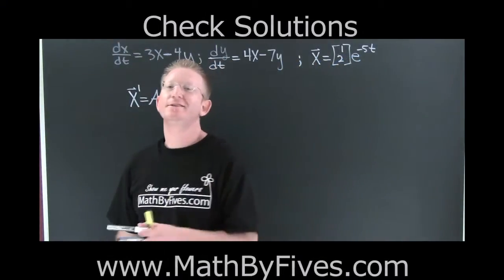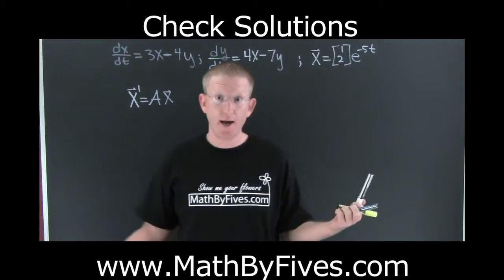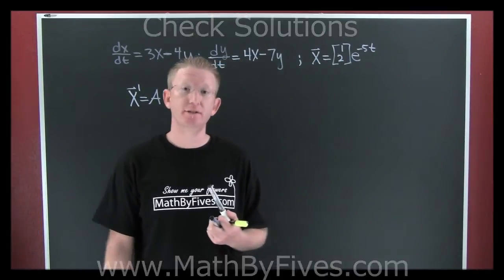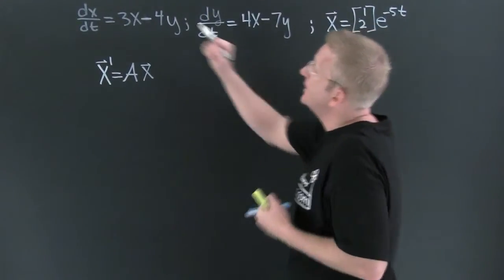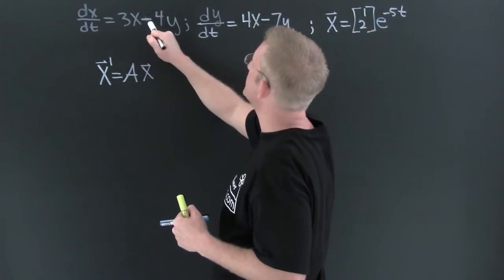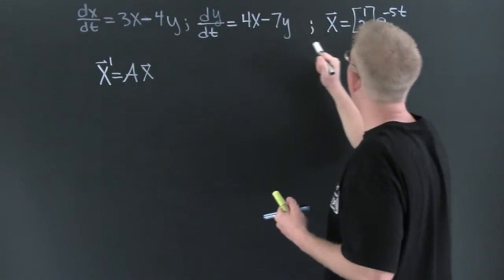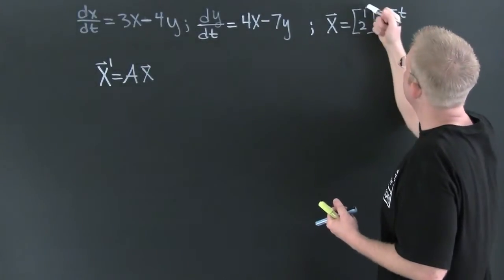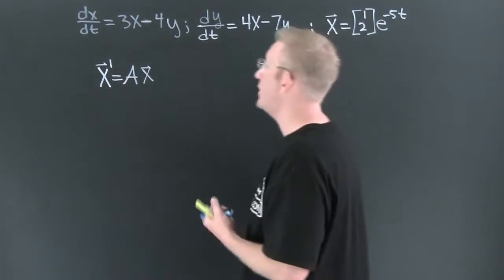Next thing we want to do is check it! Yeah, let's talk about how to check whether or not our found vector is a solution to our differential system. I have dx/dt is 3x minus 4y. My dy/dt is 4x minus 7y. And my proposed solution is 1, 2, e to the minus 5t.